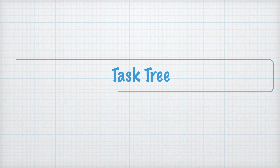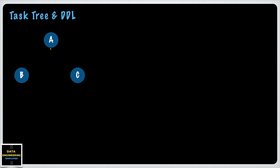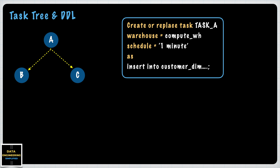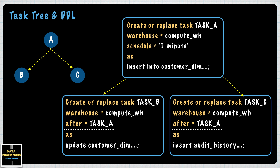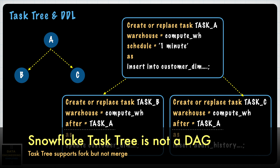Let's understand how task tree works to orchestrate complex ETL execution. Assume we have three tasks: task A finishes first, then task B and task C start in parallel. To achieve this, task tree uses one additional attribute called AFTER in child nodes. Task A is a standard root task; as soon as you use AFTER for other tasks associated with task A, they become child tasks. Child tasks do not need a schedule. However, you cannot merge task B or task C into a task D — that's the key difference between a DAG approach and a task tree in Snowflake. Task tree also has a limitation: you cannot add an infinite number of children.